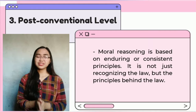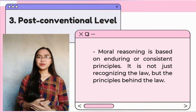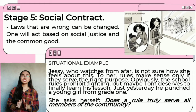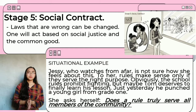Let's go to the post-conventional level. In this level, the moral reasoning is based on enduring or consistent principles — it is not just recognizing the law, but the principles behind the law. Stage five is the social contract. Laws that are wrong can be changed. One will act based on social justice and the common good. At this stage, the individual acts with an understanding that laws are created by people coming together for the common good, and that these same people can change these laws if new demands or conditions arise.